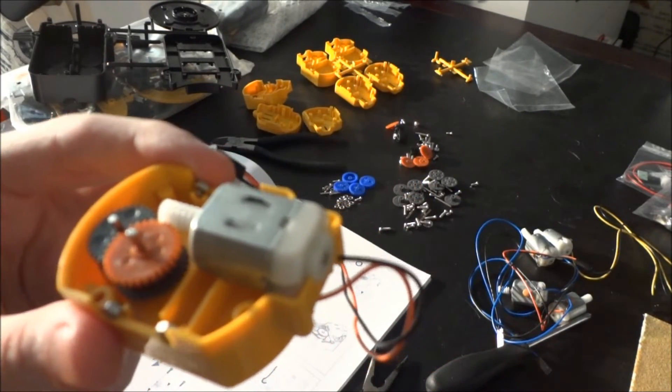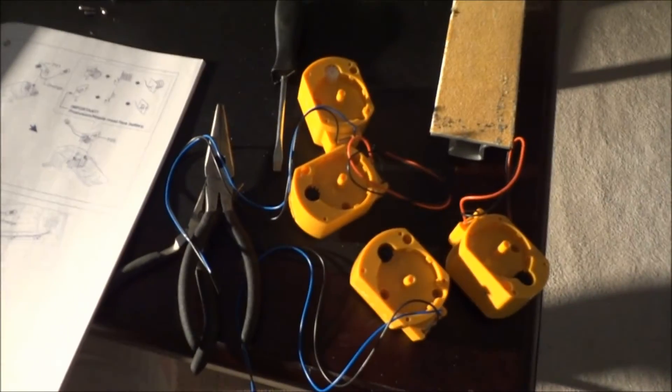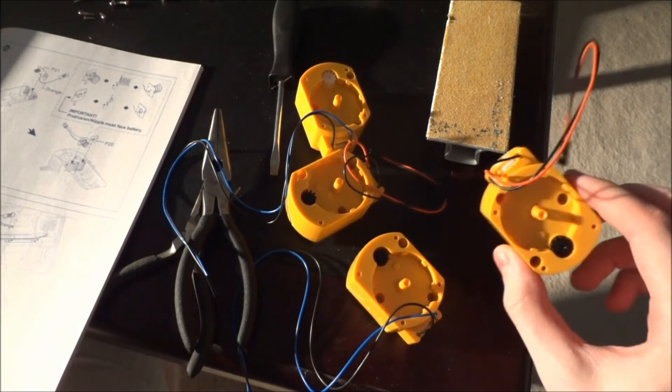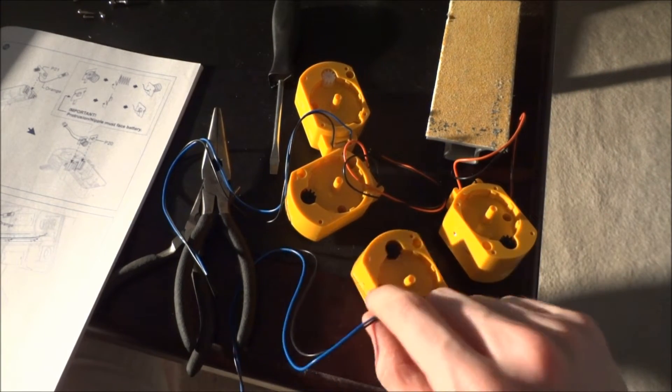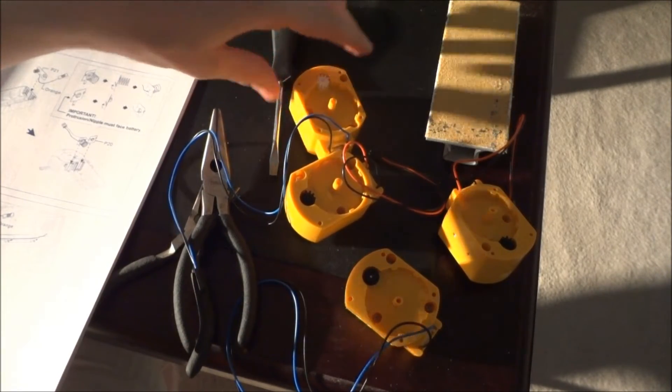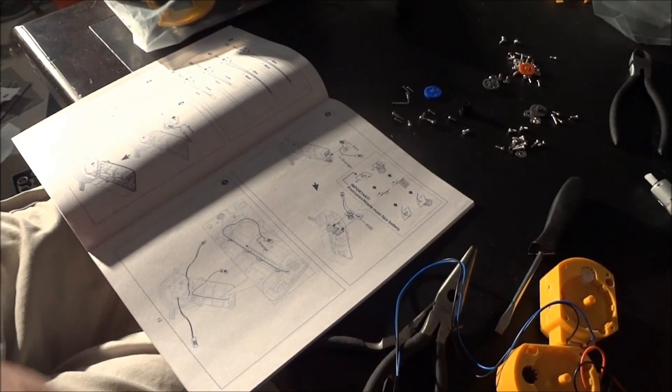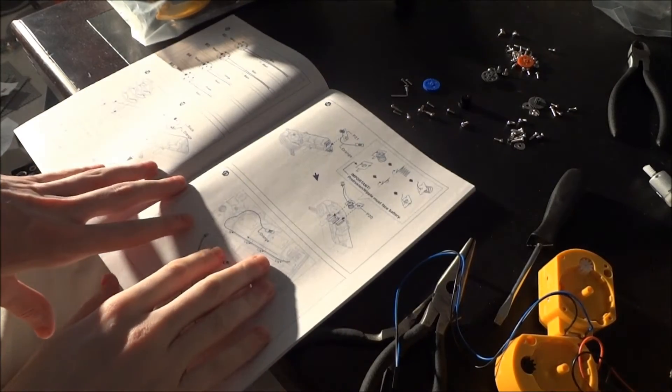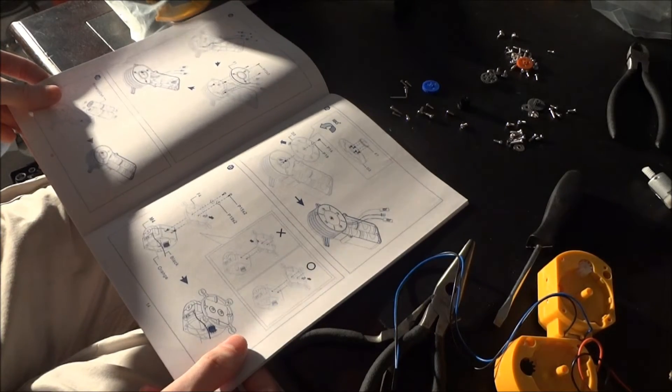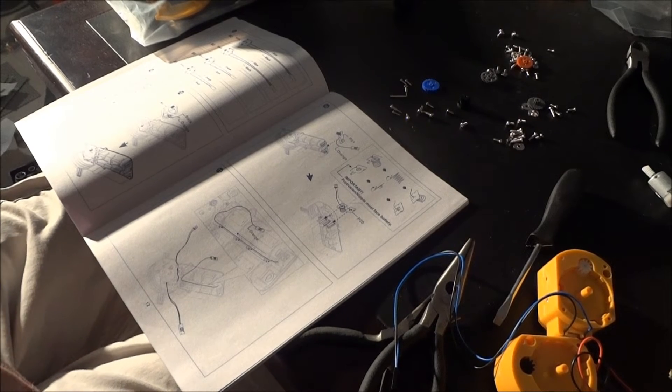I've completed building the four motor modules. Two have short wires, probably for the base, and two have longer wires for the upper portions. They're color coded and one has a white gear versus black. Now I need to start working on the base and battery holder for the D-cell batteries, then build the last module for the gripper.